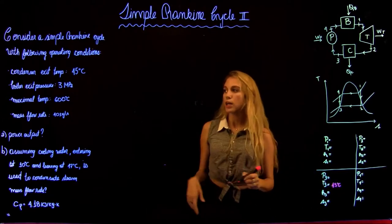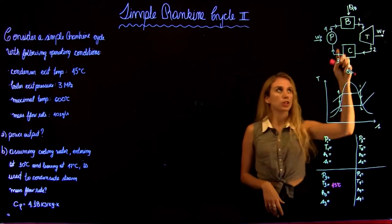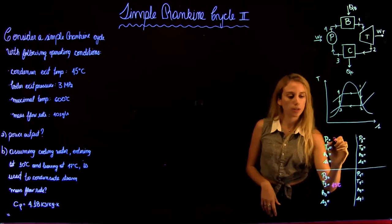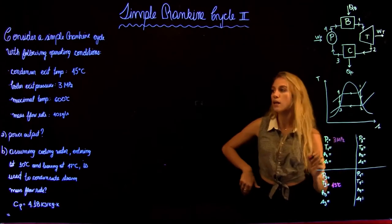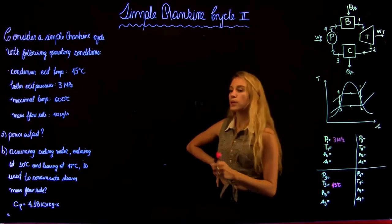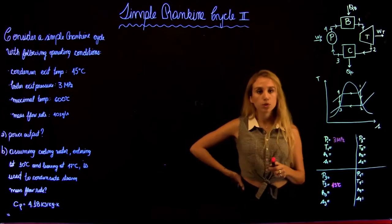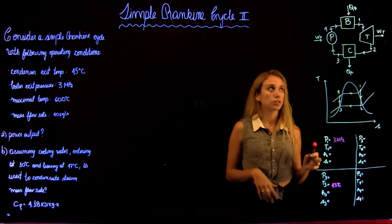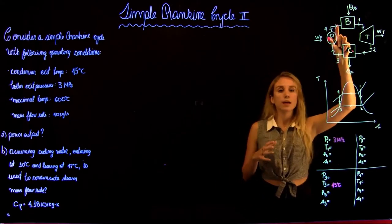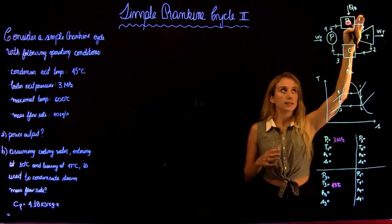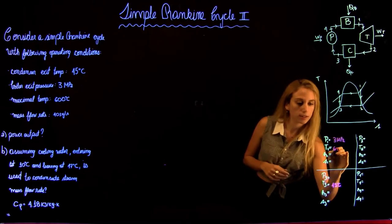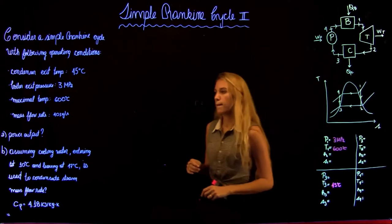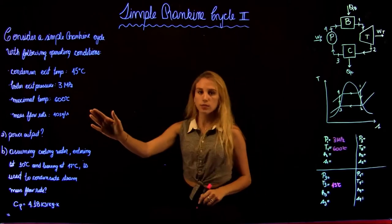The boiler exit pressure, P1, is equal to 3 MPa. We are also given a maximum temperature of 600 degrees Celsius, so the temperature at the exit of the boiler — as we can see in the T-S diagram — is 600°C. We are also given the mass flow rate.